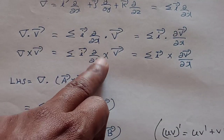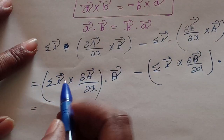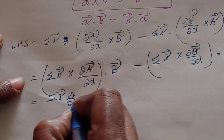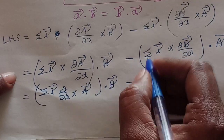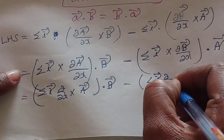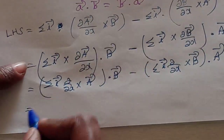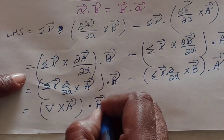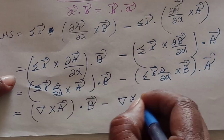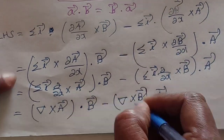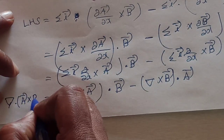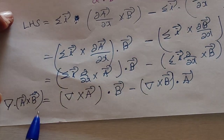Del will be used as the cross operator. Del cross v vector equals sigma i vector ∂v/∂x. Applying the del operator: sigma i vector ∂/∂x gives us del cross a vector dot b vector minus del cross b vector dot a vector. Therefore, del·(a×b) = (del×a)·b - (del×b)·a. This is the divergence-curl identity.